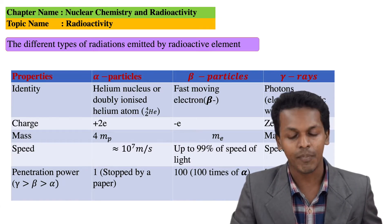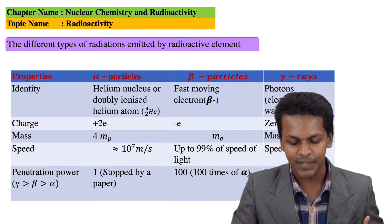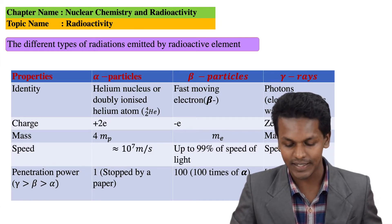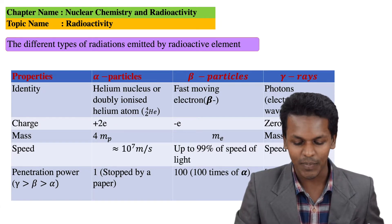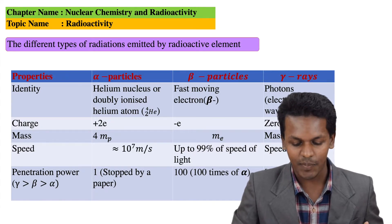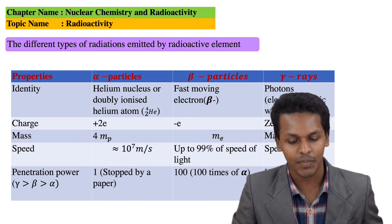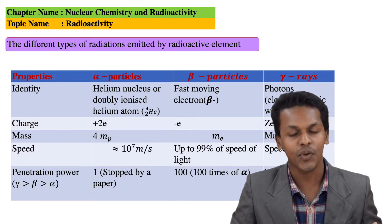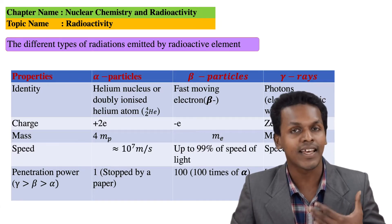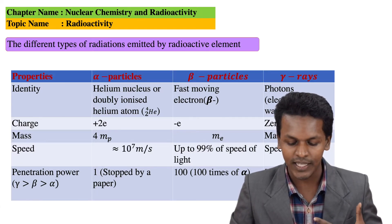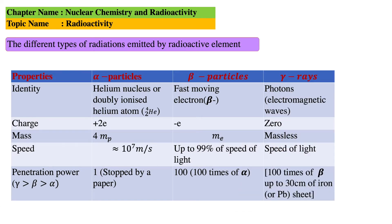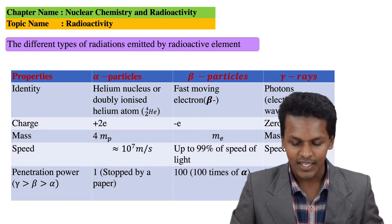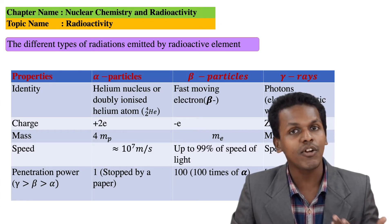Talking about the charge: the alpha particle has a plus 2 charge, the beta particle has a minus 1 charge, and gamma radiation are neutral so they don't have charge. Regarding mass, the alpha particle has a mass 4 times that of the proton, beta particles have the mass of an electron, and gamma radiation are massless.